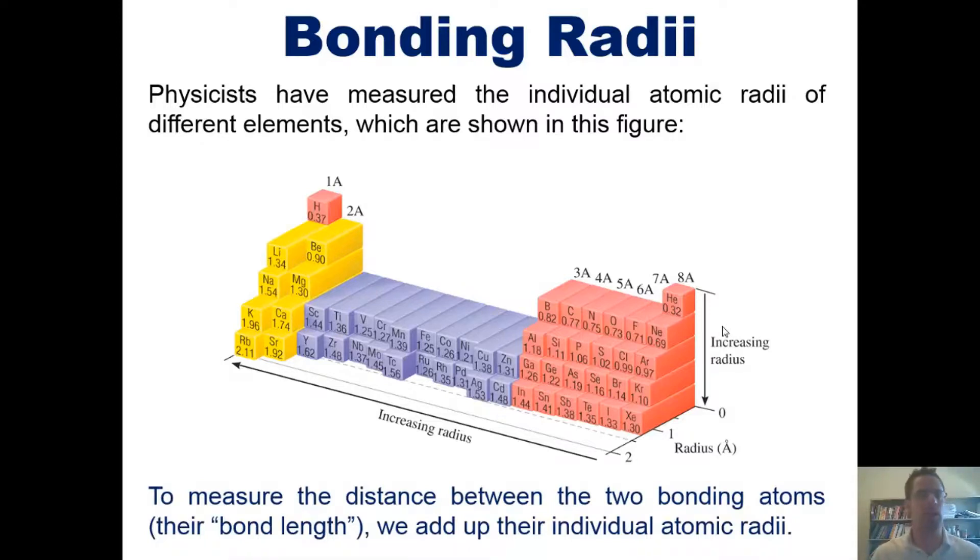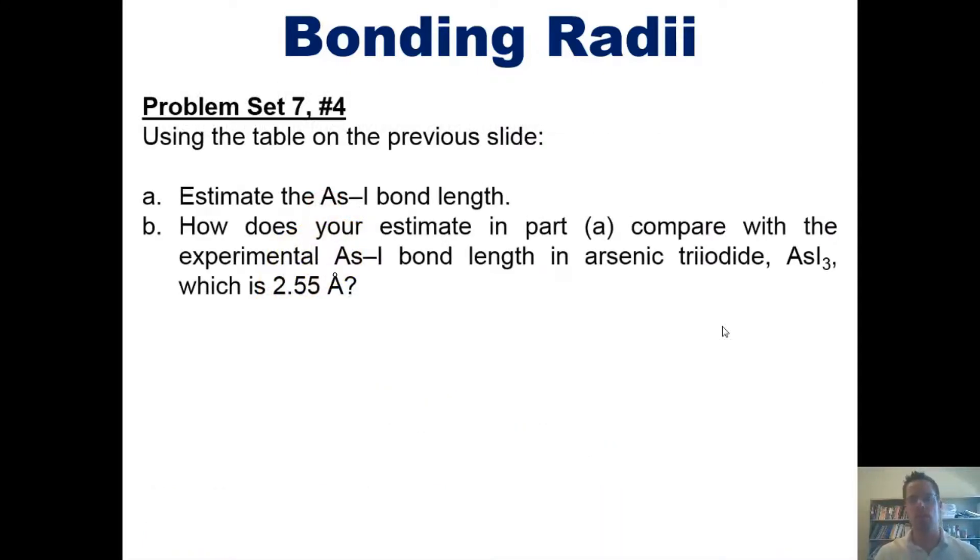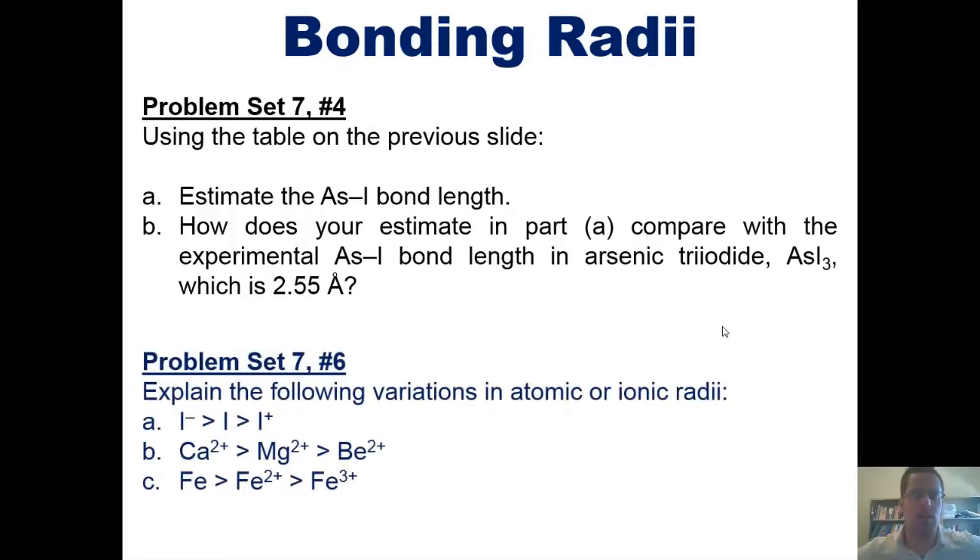To measure then the distance between two bonding atoms—their bond length—we add up their individual atomic radii. That takes us to some problems. Using the table that I just showed you, estimate the arsenic-iodine bond length. Then see how well your estimate compares to the experimental bond length for arsenic triiodide, AsI3, which happens to be 2.55 angstroms. Next, explain the following variations in atomic or ionic radii. Now I invite you to do this on your own first. If you'd like, I'm going to post a link here to a separate video in which I will show you the answers.